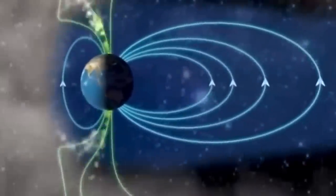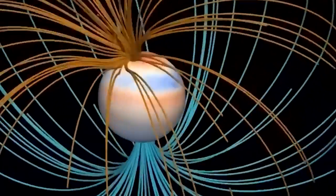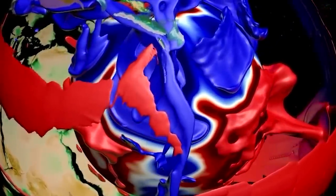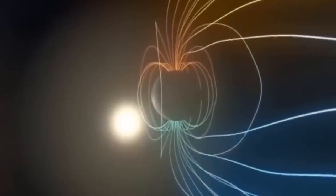When this process results in a complete reversal, it is termed a geomagnetic reversal. If the field merely experiences a hiccup but ultimately retains its initial direction, it's referred to as a geomagnetic excursion.